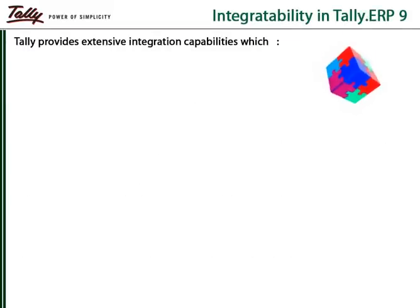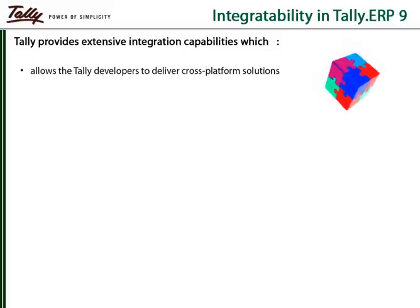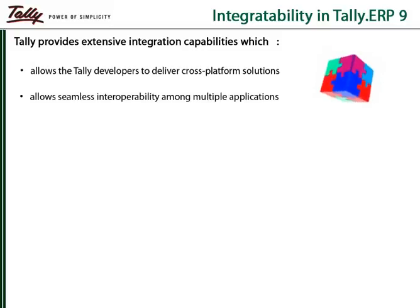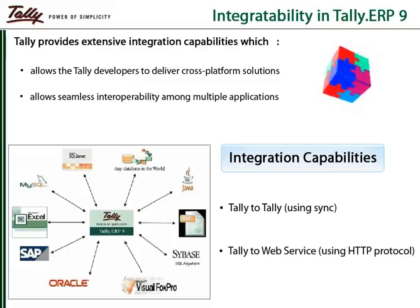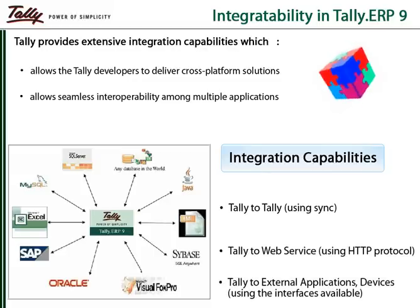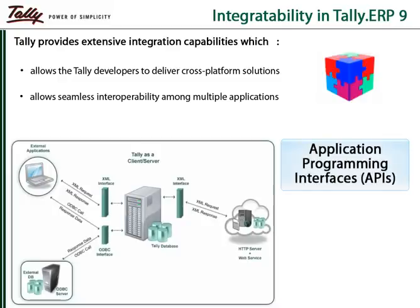Tally ERP 9 is endowed with extensive integration capabilities in online as well as offline mode. The integration can be Tally to Tally, Tally to Web, or Tally to any other application or database. The various APIs used for integration are XML, ODBC and DLL. Tally can behave both as a client and as a server, depending on the situation.